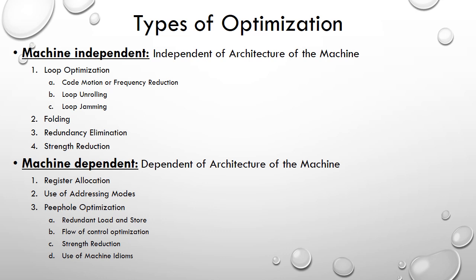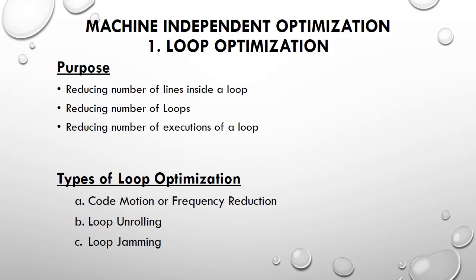In machine-independent optimization, the major role is played by loop optimization. The purpose of loop optimization is to reduce the number of lines written inside the loop, reduce the number of loops, and reduce the number of executions of a loop. For example, if a loop runs 1000 times with two statements inside, there are 2000 statement executions. If we reduce the lines from two to one, the number of executions drops to 1000.